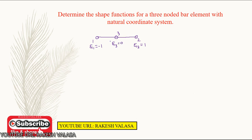In this case, there are 3 nodal unknowns: alpha 1, alpha 2, and alpha 3. Hence, a polynomial with 3 generalized coordinates is u equal to alpha 1 plus alpha 2 zeta plus alpha 3 zeta squared. In the previous problem, the bar element had only two nodes. Here the bar element has three nodes — two end nodes and a third intermediate node.